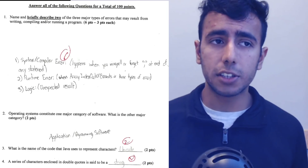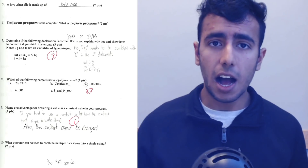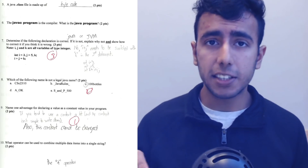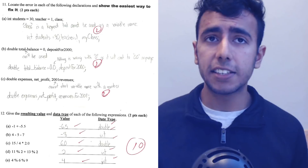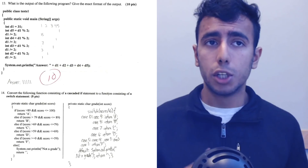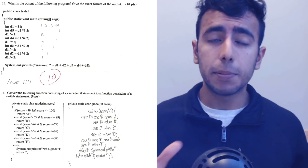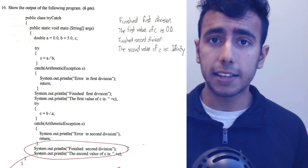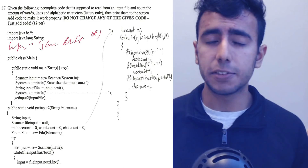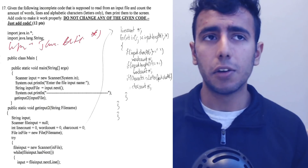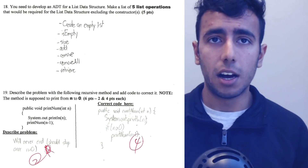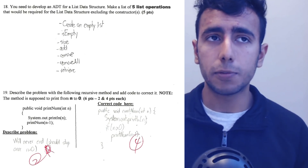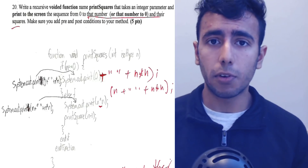Moving on to my data structures class — in this class, I have been asked to fix some errors in a program, find out mistakes, write a program, or find issues such as logical errors, compiler errors, or syntax errors. These errors were very easy for me to fix because I have worked on these programs for a long time. I have been a Java developer for a very long time, so it was very easy for me to get a hundred in this exam as well.